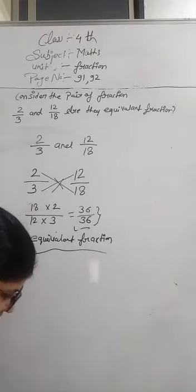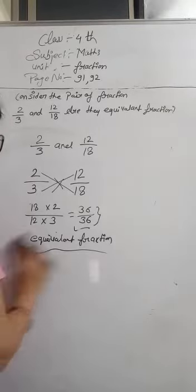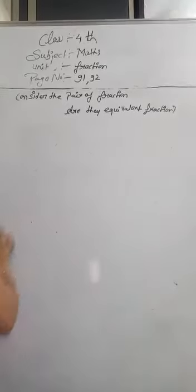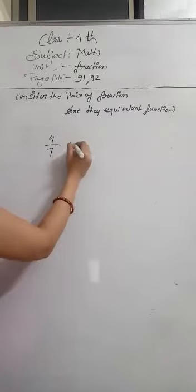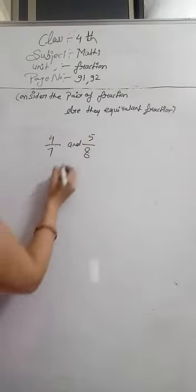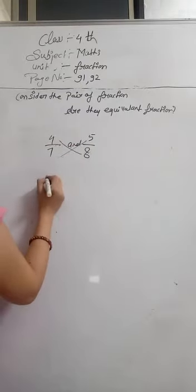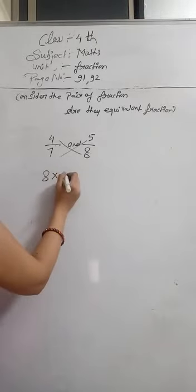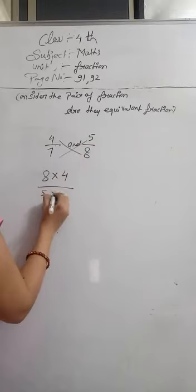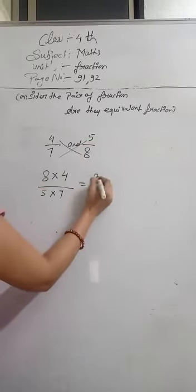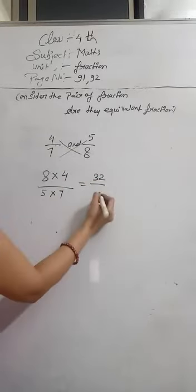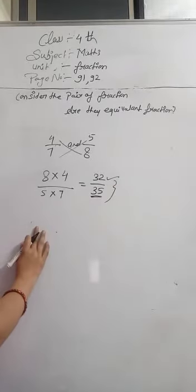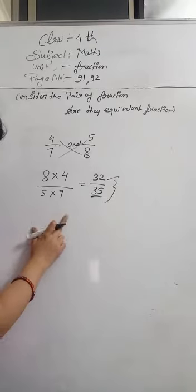Here is one more example. If there is 4 by 7 and 5 by 8, we will solve by cross multiplication. So 8 multiply 4 and 5 multiply 7. 8 fours are 32 and 5 sevens are 35. So here the numerator is 32 and denominator result is 35, so this is not an equivalent fraction. These are not equal.